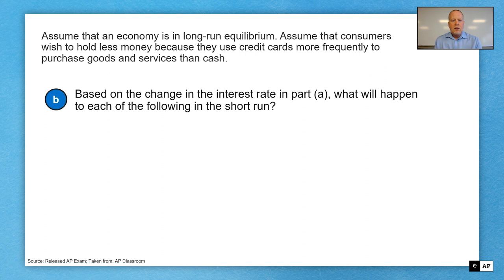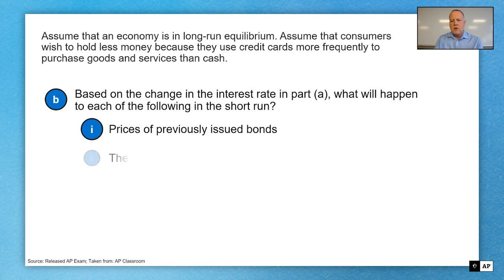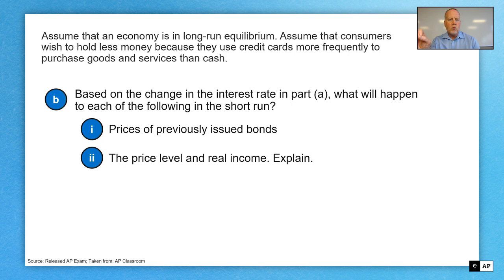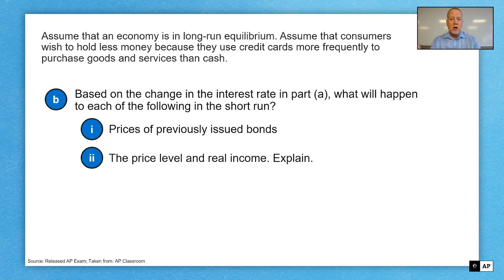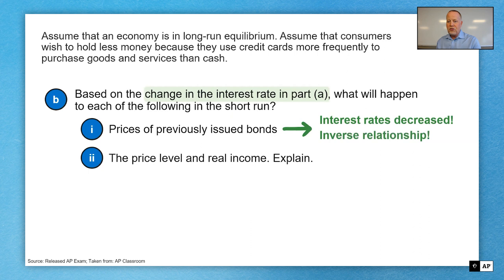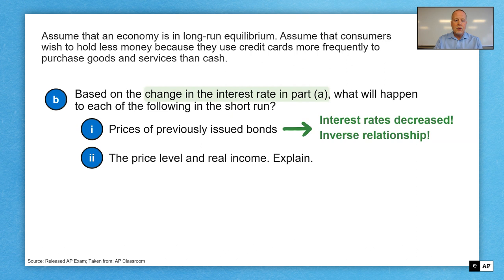Part B: based on the change in interest rate in part A, what will happen to each of the following in the short run? First, the price of previously issued bonds. For B-I, note it doesn't say explain — you're just identifying what's going to happen. In part A, interest rates decreased. We know from our learning that there's an inverse relationship between interest rates and the price of previously issued bonds. Therefore, the price of previously issued bonds will increase.